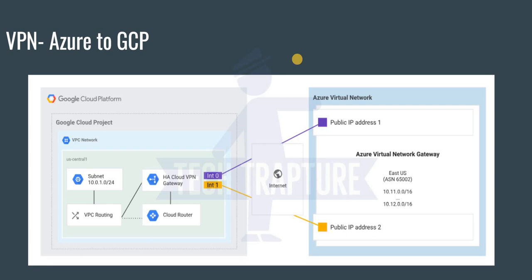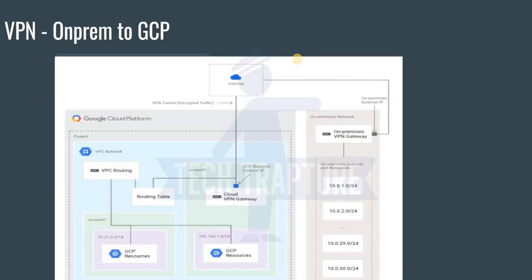In the next video, I'll show a small demo on VPN, because Interconnect is not in scope to fully set up — we can only raise the request. But VPN is something we can configure in the Cloud Console. I'll show you how to communicate using internal IPs between two networks using VPN. For this video, we're stopping here. Thank you for watching, and we'll see you in the next video.